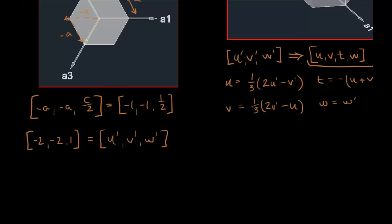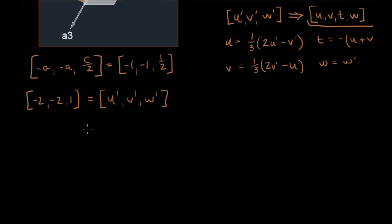So let's just go through and start solving for each of the directions now. U equals 1 third of 2 times U prime. That's 2 times negative 2, that's negative 4, minus V prime, minus negative 2, okay? And that's 4 plus 2, or minus 4 plus 2, that's minus 2. And so this is negative 2 thirds.